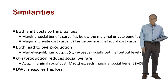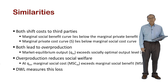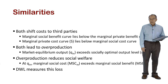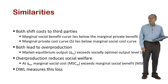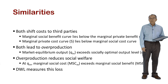We know this because if we calculate the marginal social cost, denoted MSC_m, it exceeds the marginal social benefit. That means that the value of resources going into the production of that unit exceeds the benefit created by producing it. We measure the loss to society using the concept of deadweight loss — it's a money measure of the inefficiency.